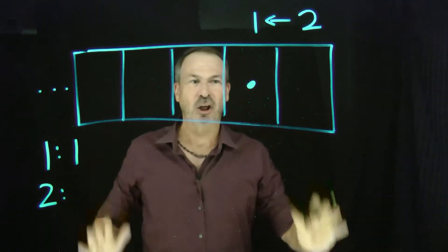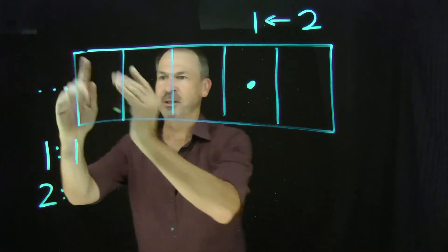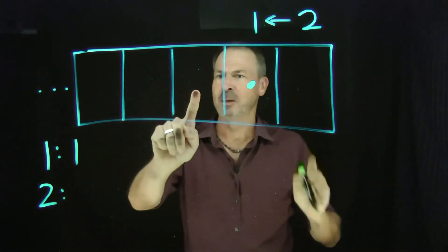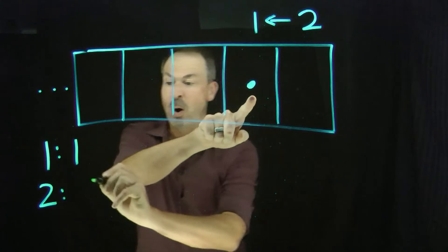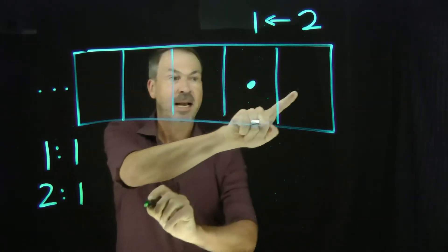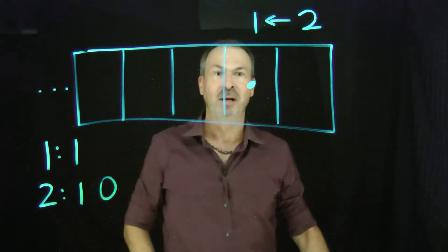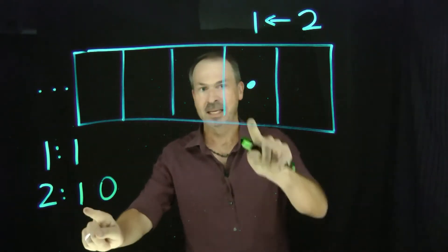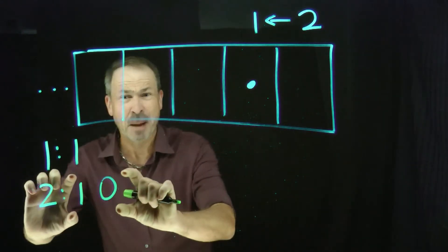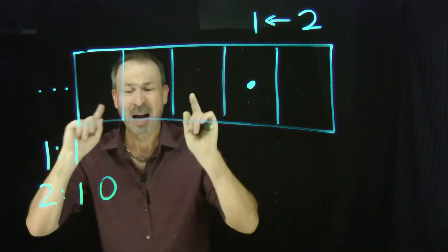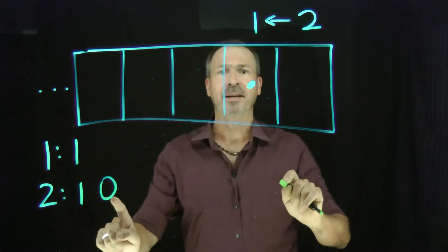So the code for the number two in my machine is: no dots, no dots, no dots — we won't bother writing all those empty boxes — but there's one dot there and zero dots there. The code for the number two in this machine is one zero. I know this looks like the number ten, but I really am thinking one dot, zero dots. One zero.